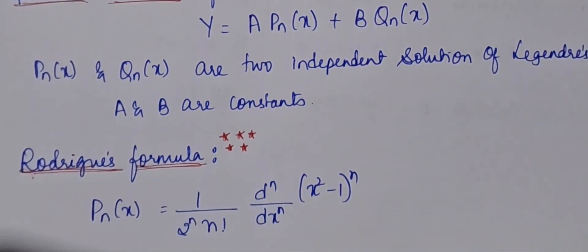Then, the Rodriguez formula — this is a most important topic. The Rodriguez formula is: Pₙ(x) = 1/(2ⁿ n!) · dⁿ/dxⁿ (x² - 1)ⁿ. Using this Rodriguez formula, we can find the coefficient of zⁿ in the generating function for n = 1, 2, 3, and so on.